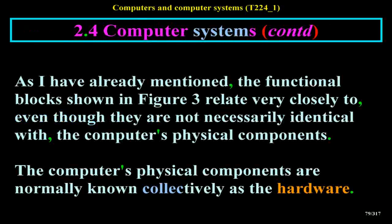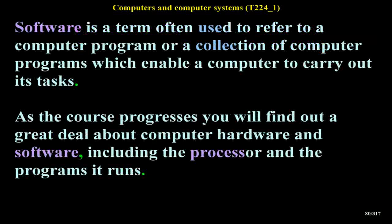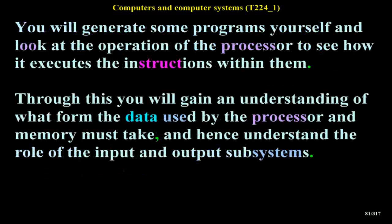The functional blocks of Figure 3 closely relate to the computer's physical components, which are collectively known as hardware. Software is a term used to refer to a computer program or collection of programs which enable a computer to carry out its tasks. As the course progresses you will find out about computer hardware and software, including the processor and the programs it runs. You will generate some programs yourself, look at how the processor executes instructions, and gain understanding of what form data must take, and hence understand the role of input and output subsystems.